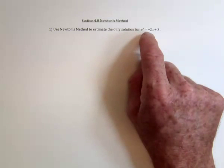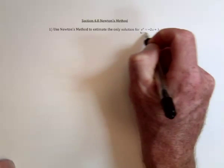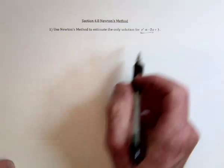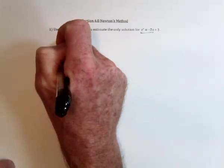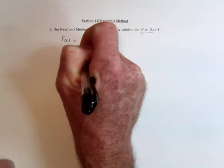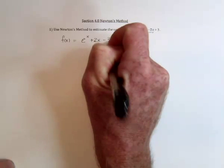So instead, we use Newton's method. With Newton's method, it's not supposed to be two functions, it's supposed to be one. So what I can do is subtract one to combine them. So let f(x) equal e^x plus 2x minus 3.